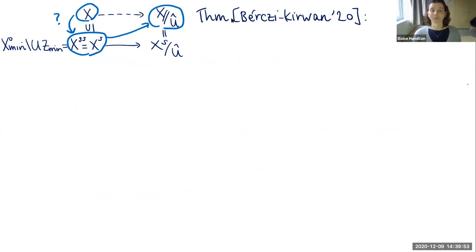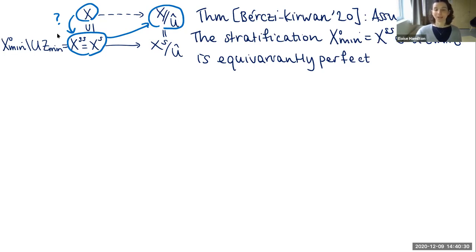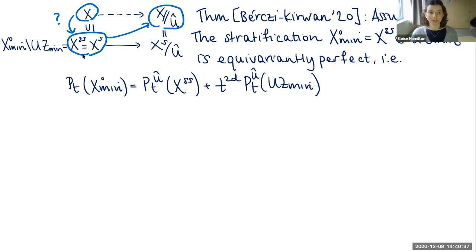I'll state a theorem from a paper on non-reductive GIT by Bérczi and Kirwan from this year. Assuming X is smooth, in the non-reductive case the stratification we look at is simpler: it is a stratification of X^{0,min} into the semi-stable locus and the U-sweep of Z_min. They show this stratification is equivariantly perfect, meaning we have an equality of the Û-equivariant Poincaré series of X^{0,min} involving D, the codimension of the U-sweep of Z_min inside X.